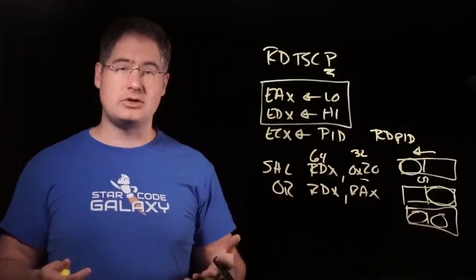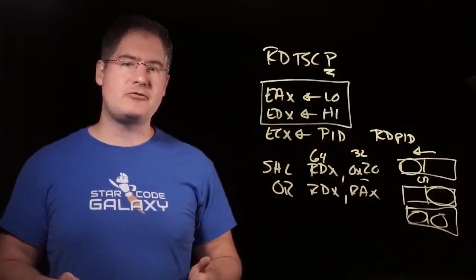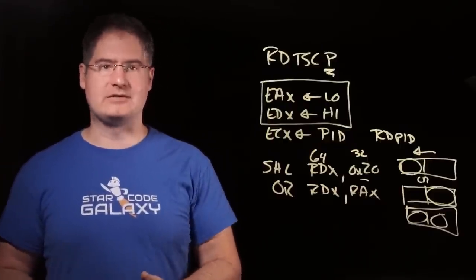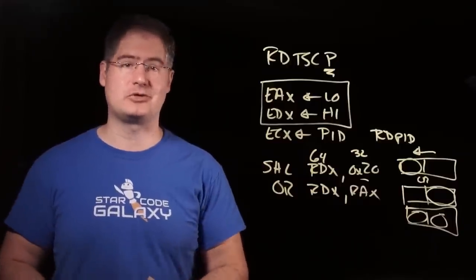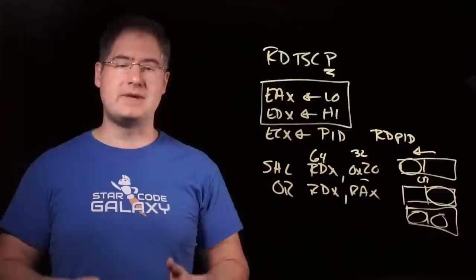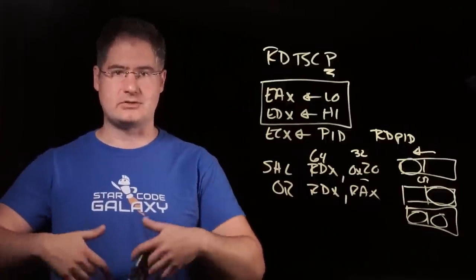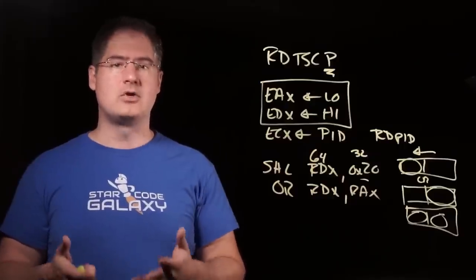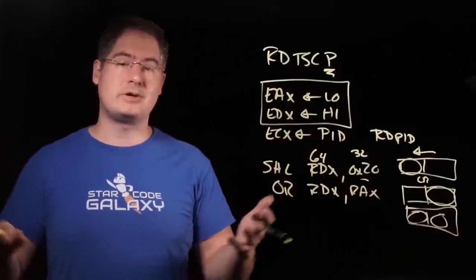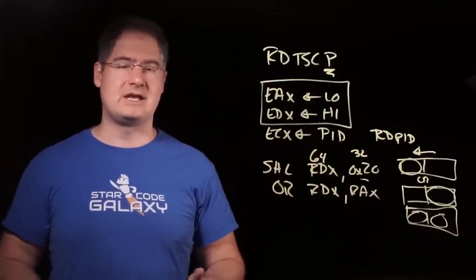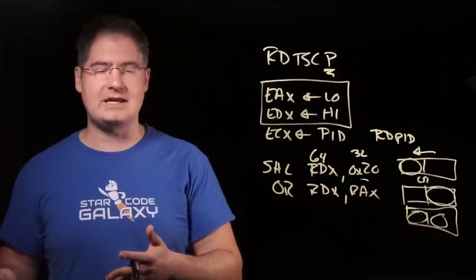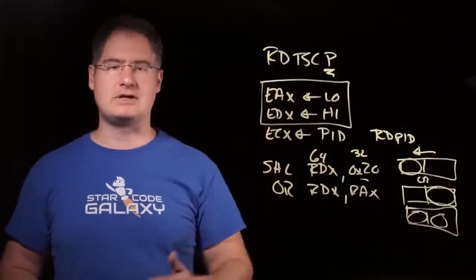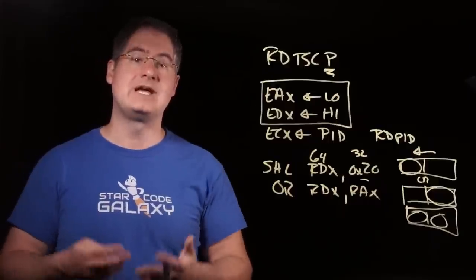the answer depends on what you're expecting to happen. If you are trying to have the operating system just pick a good timing source for you because you don't really know. Maybe you've made an executable that's supposed to run on random end user machines and you just don't know. You just want it to give you back some reliable time source. Well, query performance counter makes perfect sense. It will use something like an HPET on older systems and it will use RDTSC-P on newer systems. That's what you wanted.